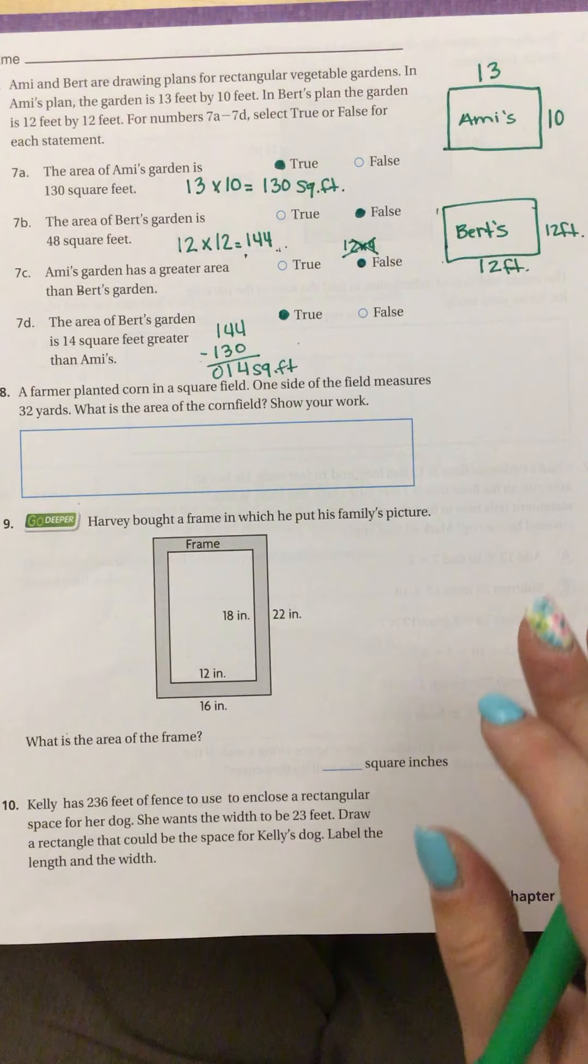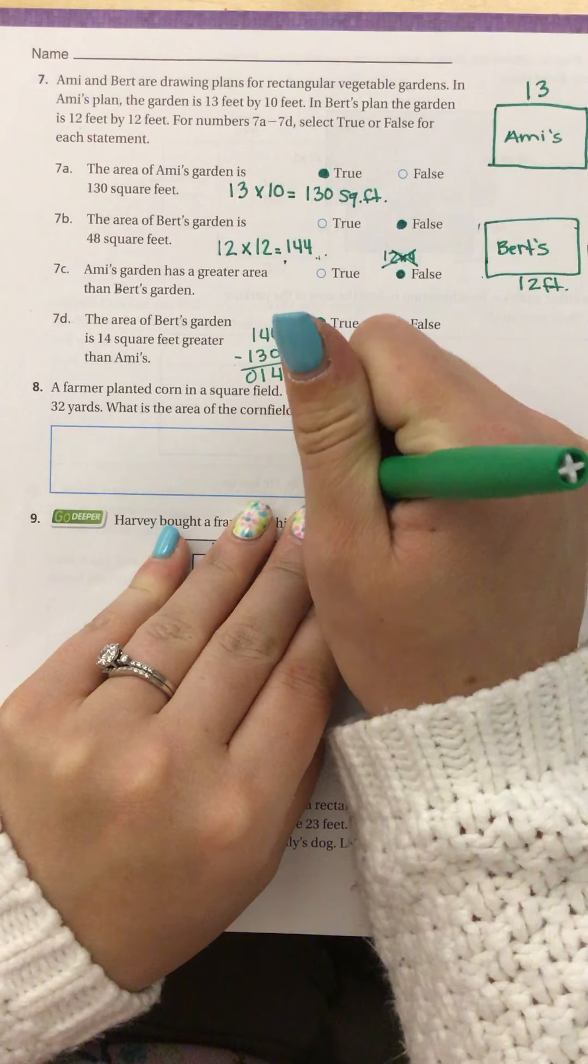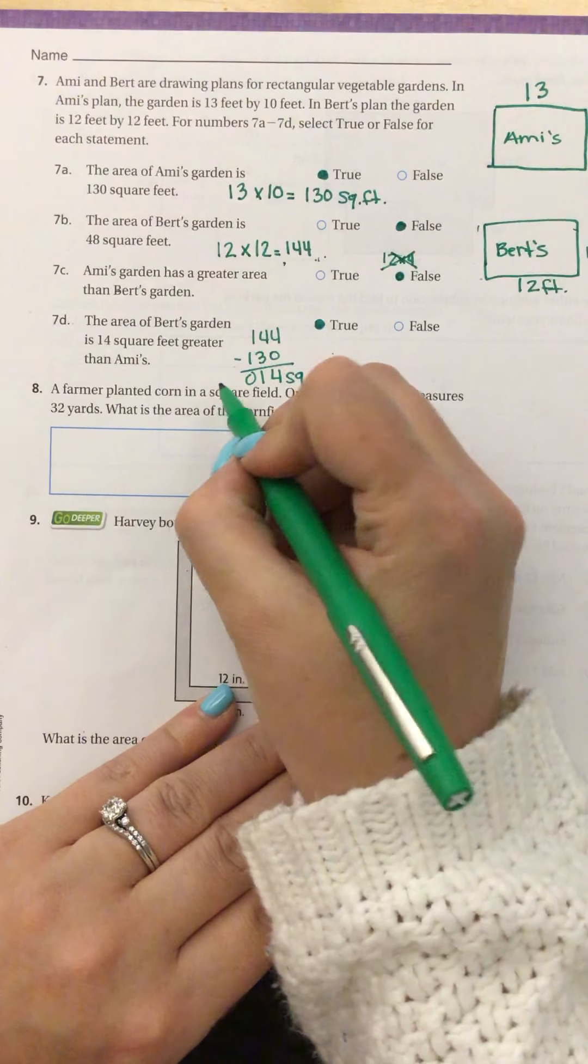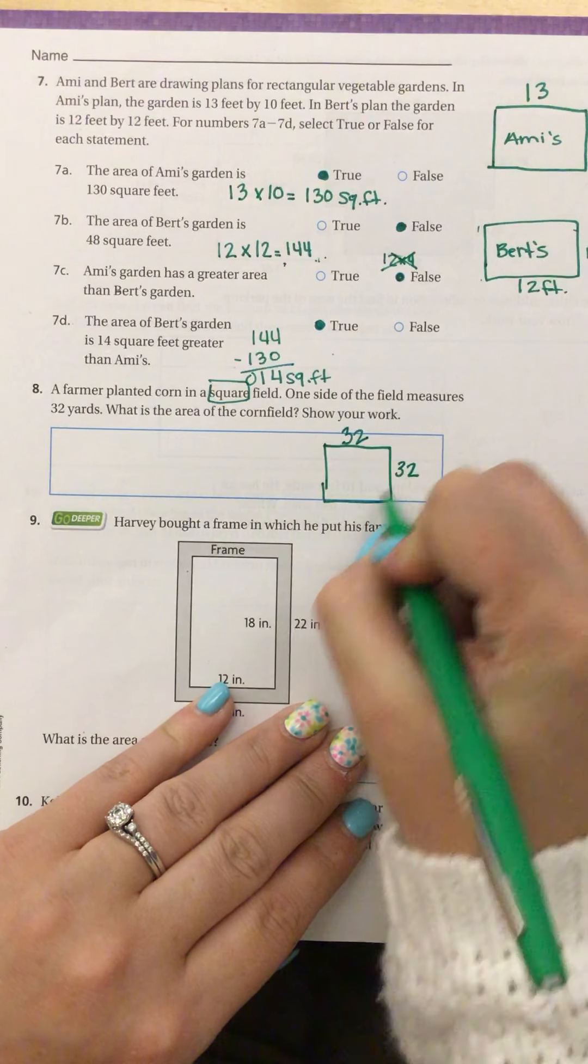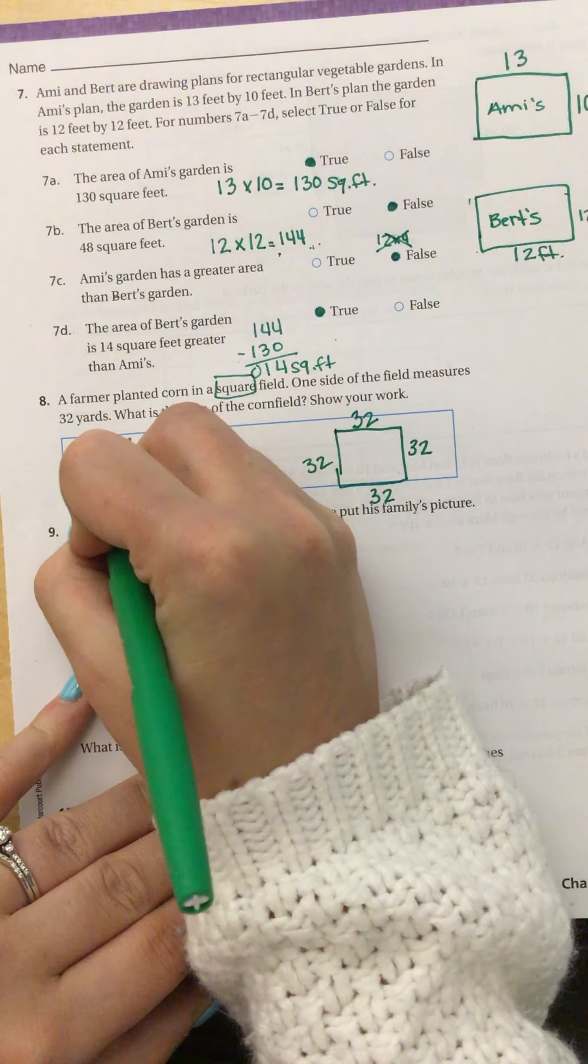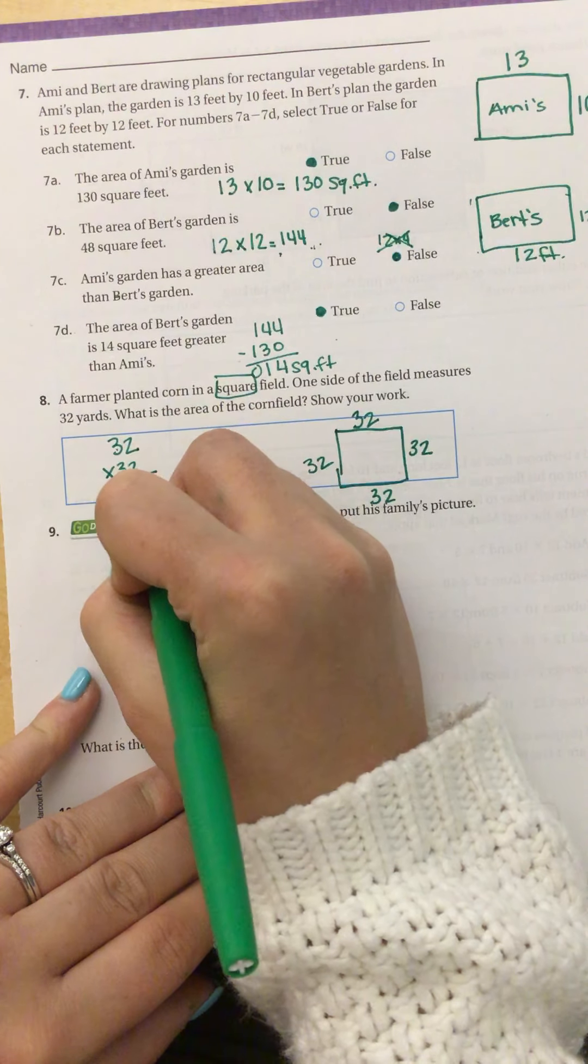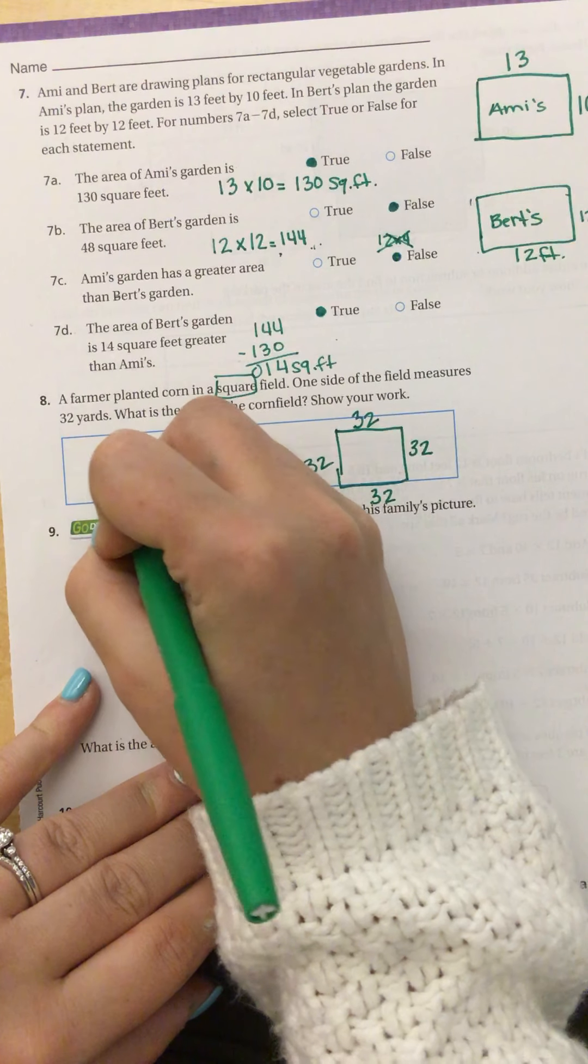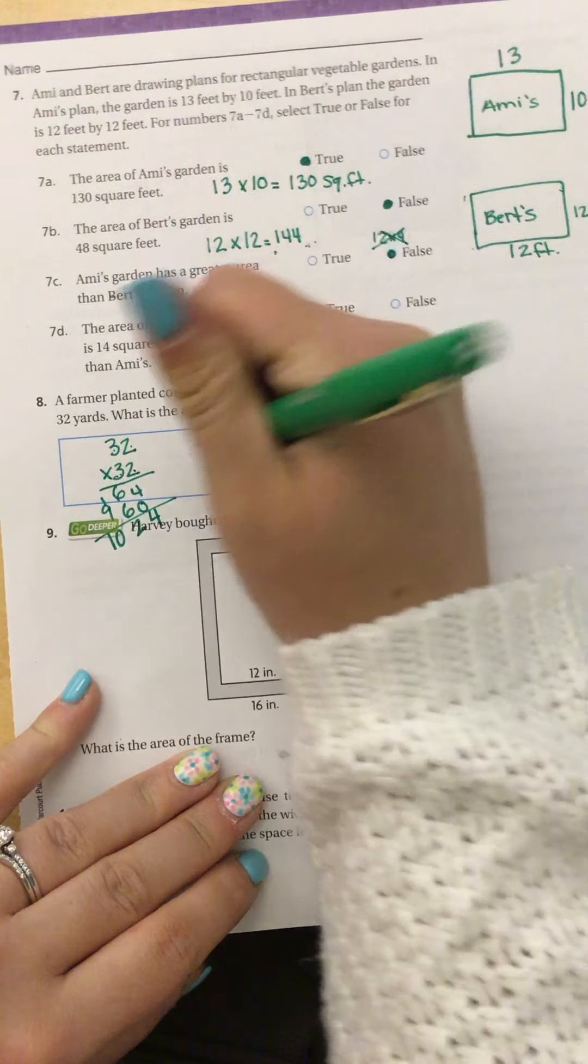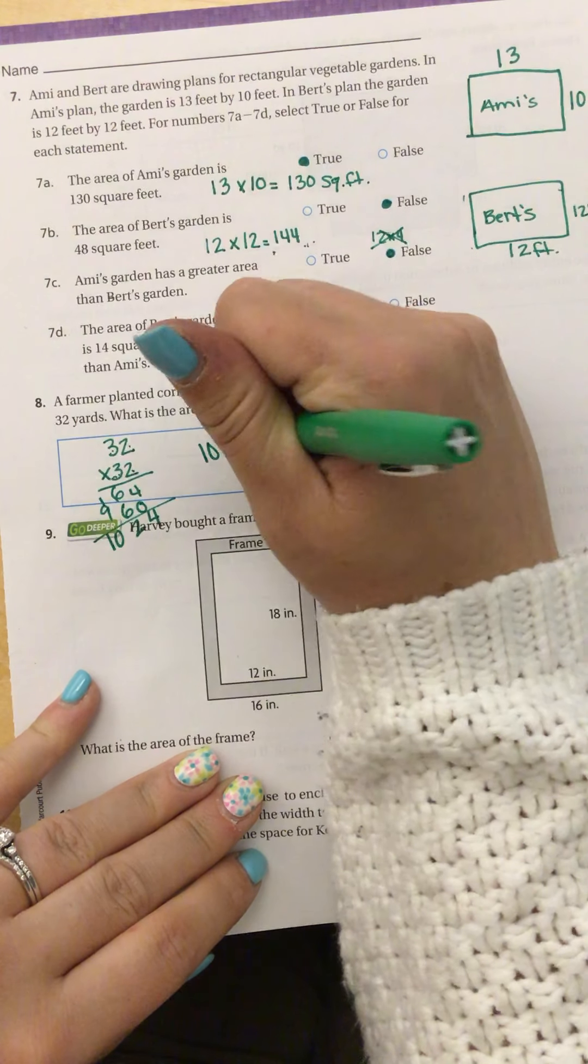Number 8. A farmer planted corn in a square field. Okay, so I'm drawing my square field, and we're going to pretend that's a square. One side is 32. Well, in a square, since it tells us this is a square, we know that all the sides are equal. Now it says, what is the area of the cornfield? So area is side times side, or base times height. 2 times 2 is 4, 2 times 3 is 6. Add my 0. 2 times 3 is 6, 3 times 3 is 9. When I add those together, I get 1,024 square yards.